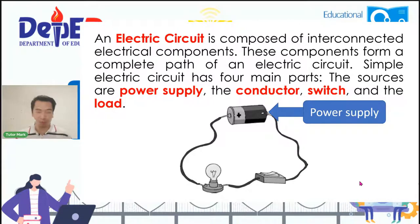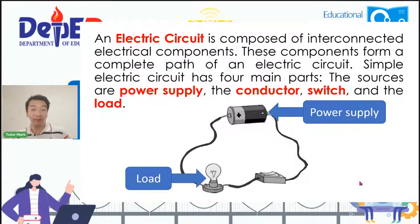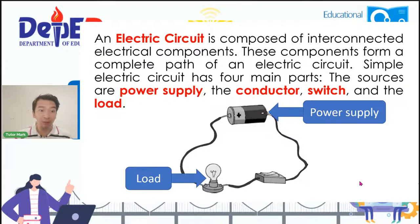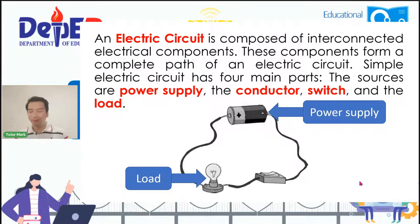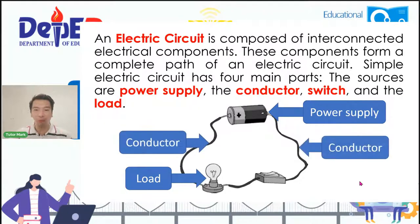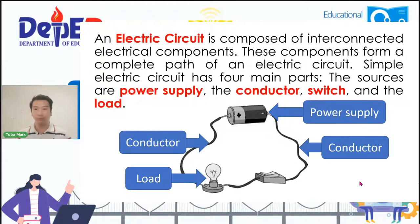Ang bahagi rin na ito ay tinatawag na load. This is actually the equipment. Halimbawa ng load ay electric fan, radio, television, and so on — yung mga kagamitan natin sa bahay. Ang tawag natin dito ay load. Susunod ay ang tinatawag nating conductor. The conductor is actually the wires. Hindi ba napag-aralan natin na good conductor of electricity ang mga copper wires, especially the metals. Yan ang ginagamit natin para mabuo ang tinatawag nating electric circuit. We need to have a conductor.